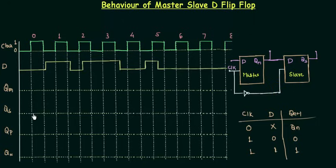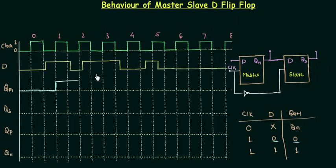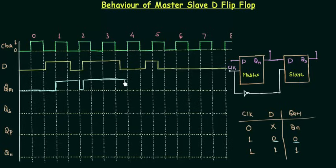Let's start plotting QM. QM is 0 for the first high clock pulse because D is 0. QM remains 0 up to that point. When the clock is high again and D is high, QM also goes high till the next high pulse. In the next high pulse something interesting happens — D goes low for a small time and then becomes high again while the clock is still high, which causes glitches.